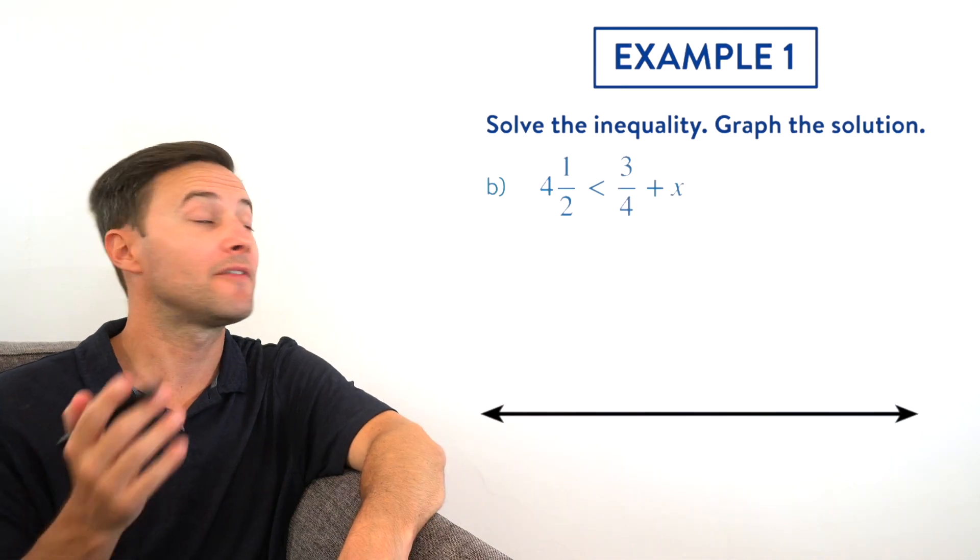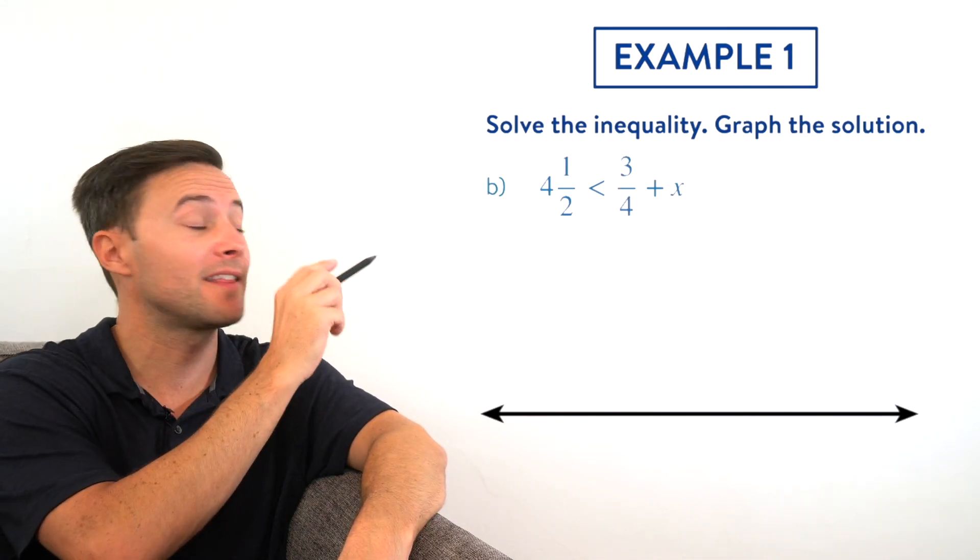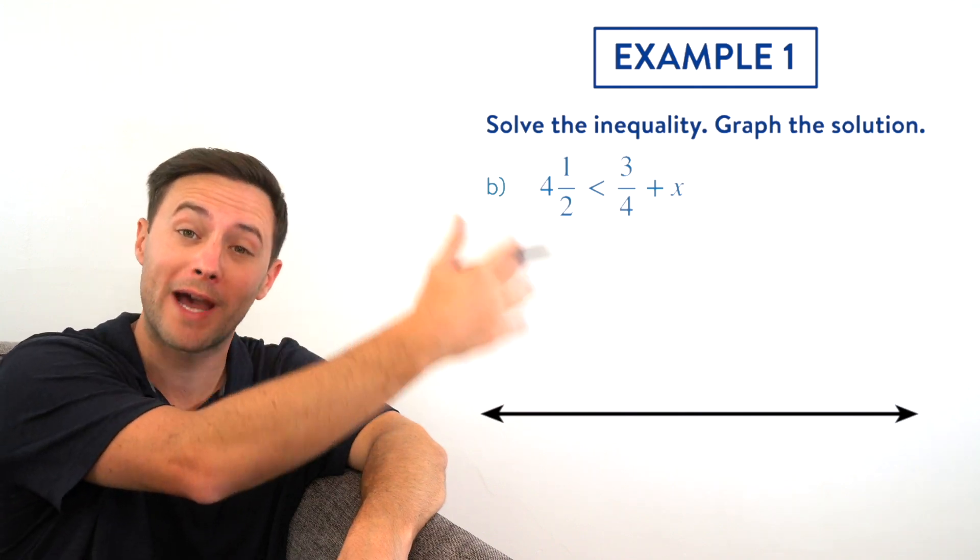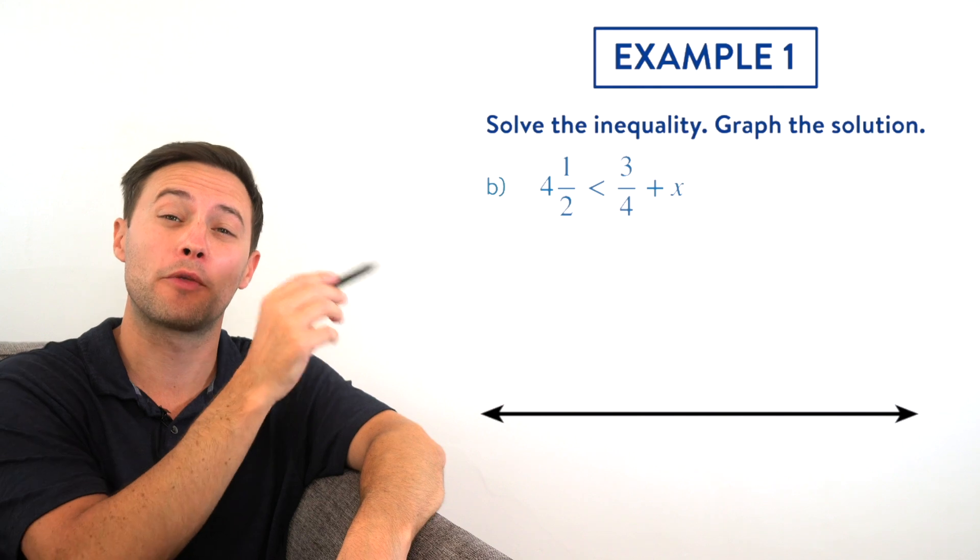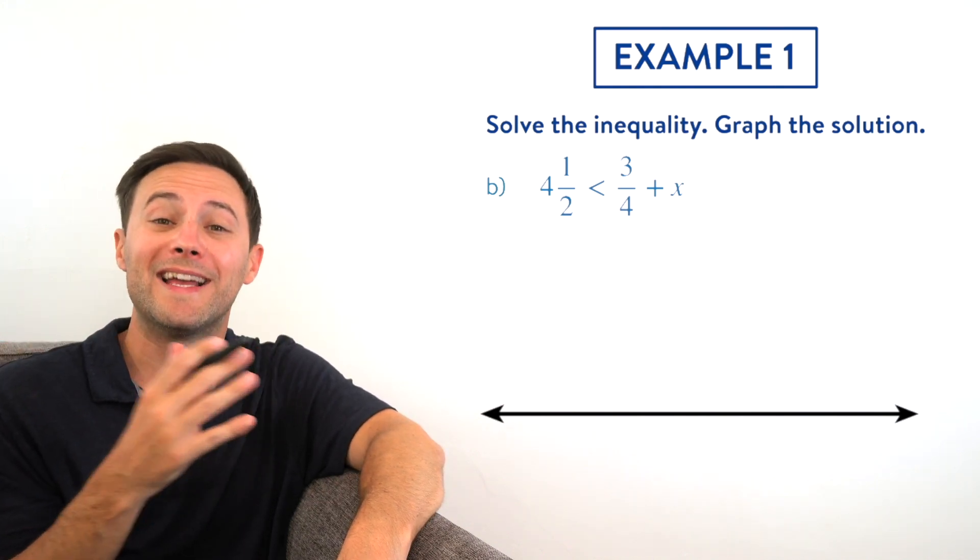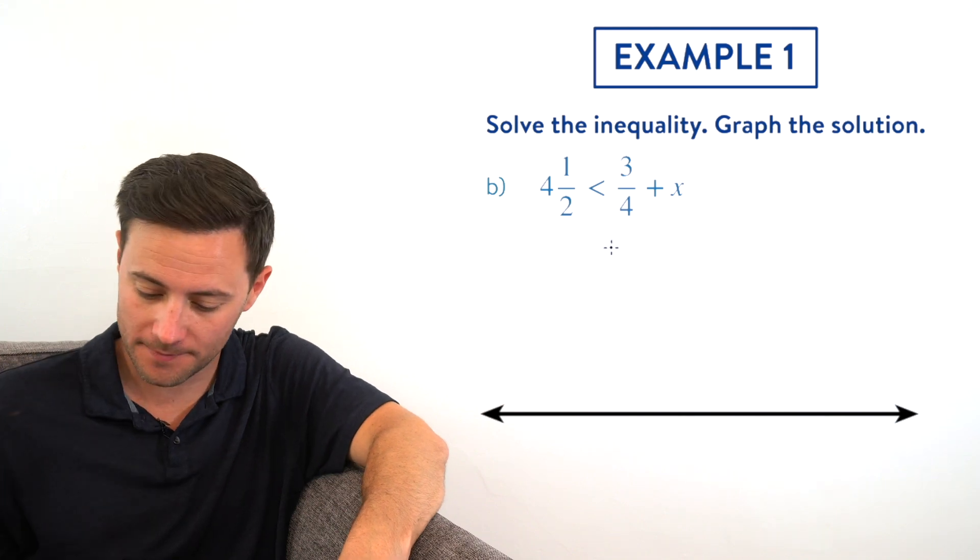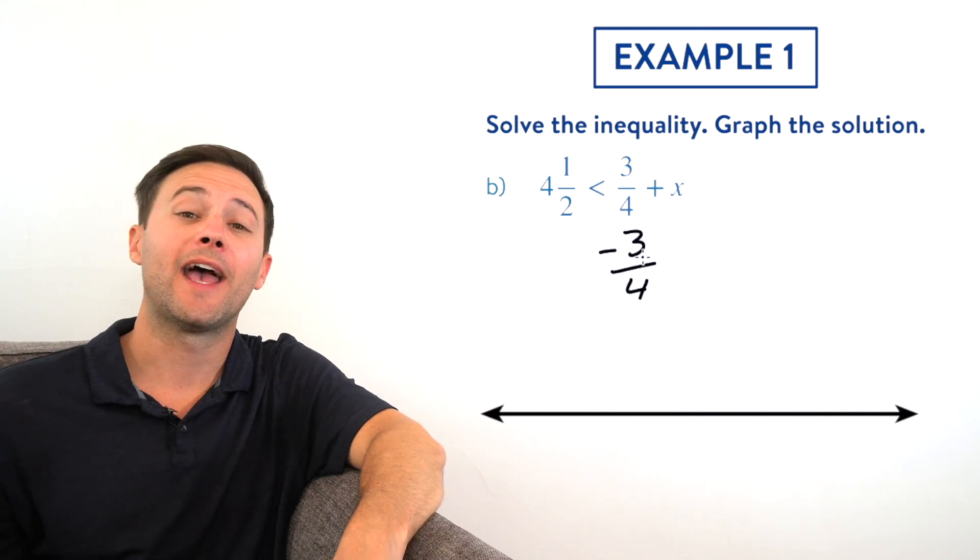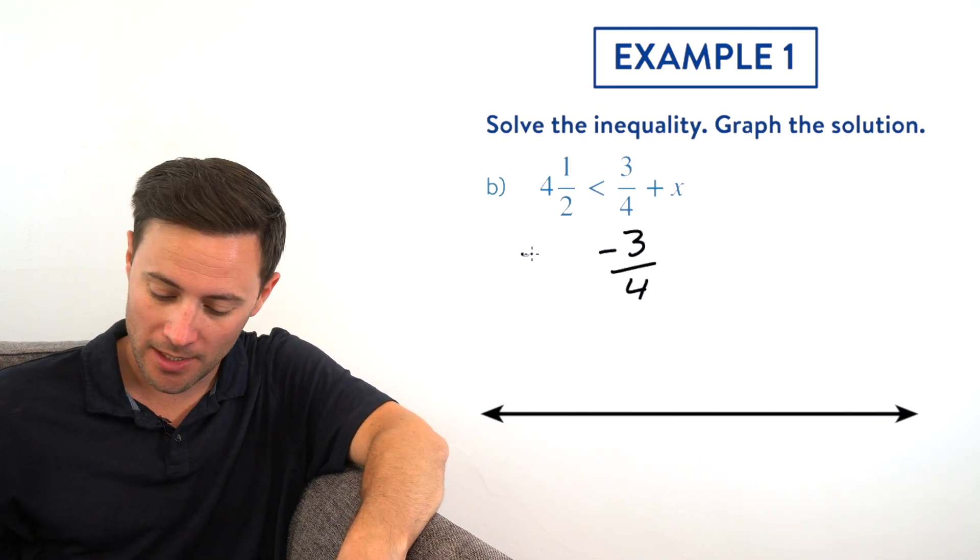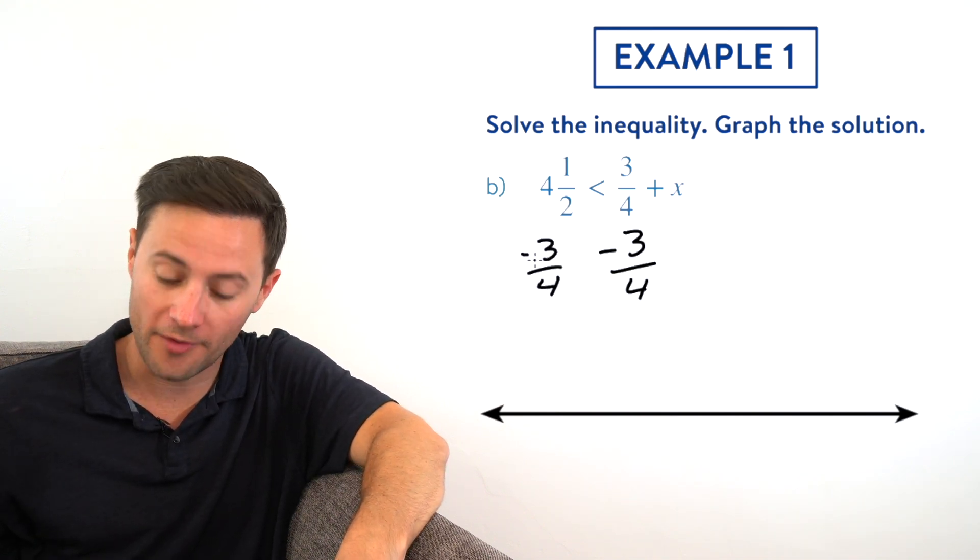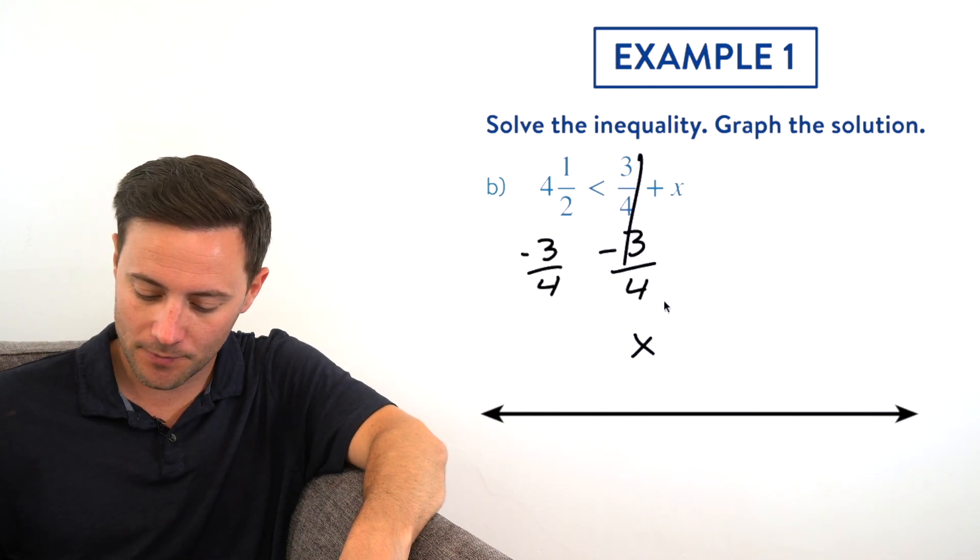All right, let's try b. 4.5 is less than 3.4 plus x. Same thing—we're going to try to get that x alone on the right side this time. And to do that, we need to get rid of that 3.4. Well, it's being added to the x, so I need to subtract 3.4 to get the x alone. And anything I do to one side, I need to do the exact same thing to the other. So I'm going to subtract 3.4 on the other side.